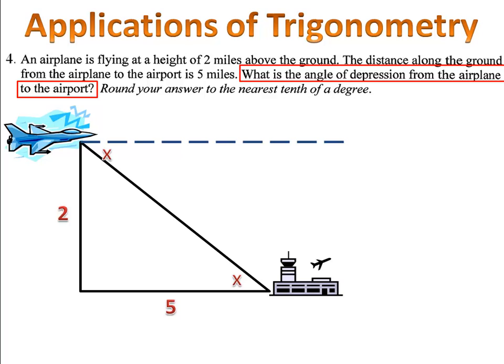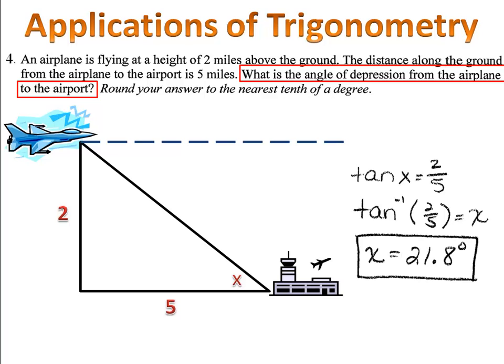Now we can use our trigonometry. We have our opposite and our adjacent once again. So the tangent of angle x is two over five. Now, we find the angle with the inverse and we find out that the angle of elevation is 21.8 degrees, which means the angle of depression is also 21.8 degrees.